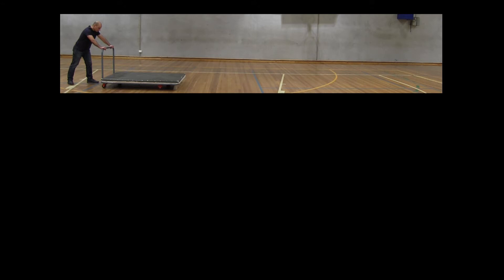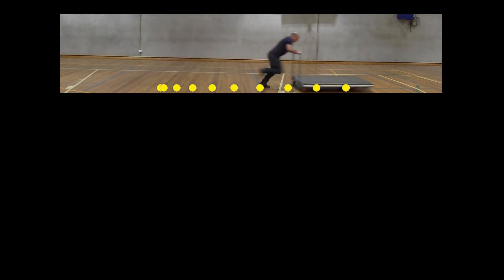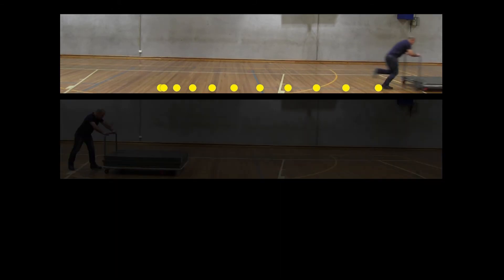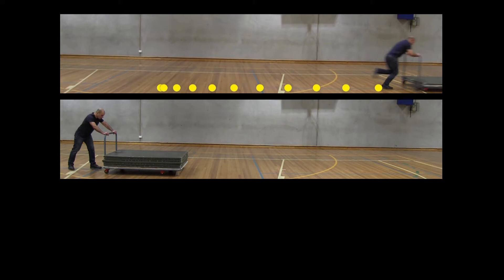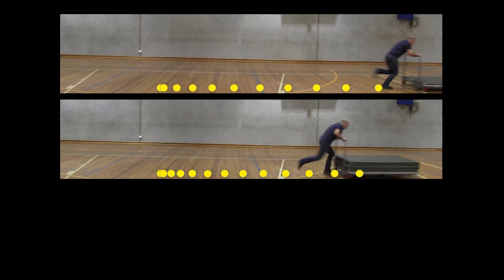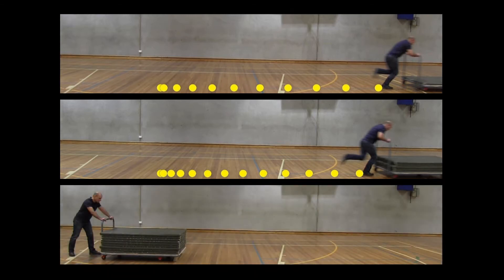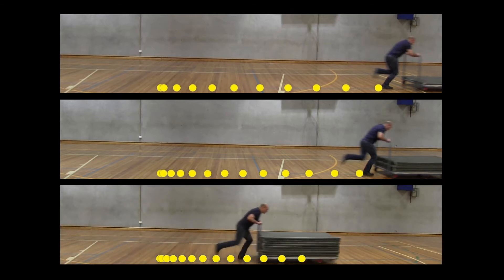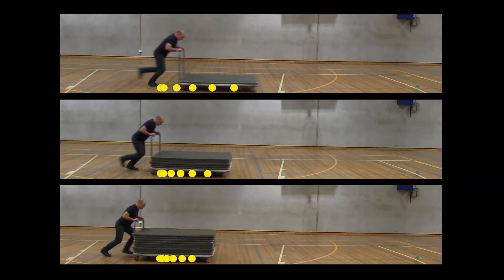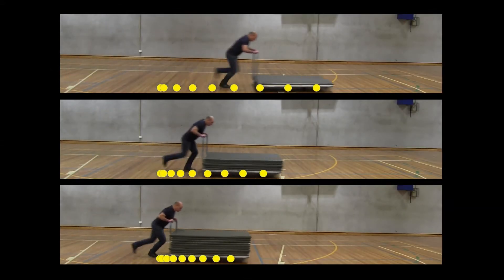Now what happens if we keep the force the same but vary the mass? When the trolley has only one green mat on it, I can accelerate it fairly quickly. If I increase its mass by loading more mats onto it and then apply the same force, the acceleration is a lot smaller. Increasing the mass again results in an even smaller acceleration. It's quite clear that for any given force, a larger mass will accelerate at a lower rate than a smaller mass.